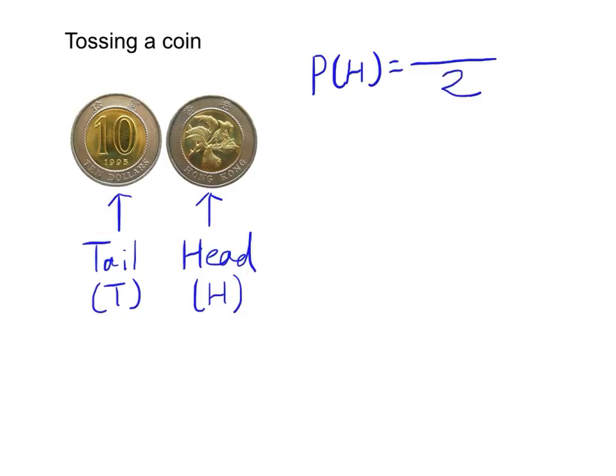And the probability of getting a head will be one out of two. Therefore this will be one over two. Similarly, the probability of getting a tail will also be one outcome over two possible outcomes. And in the case of a fair coin, fair actually means the probability of getting a head or tail is equal. So we call this a fair coin. And if a coin is not fair, then these two probabilities will not be equal to each other.